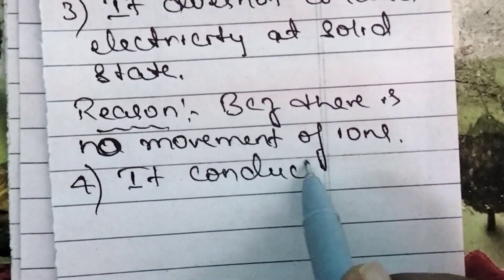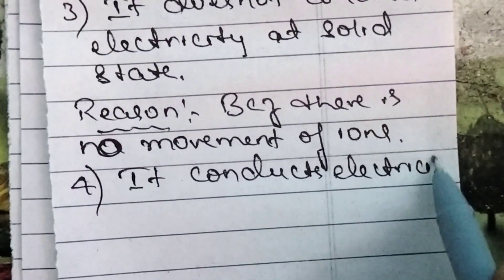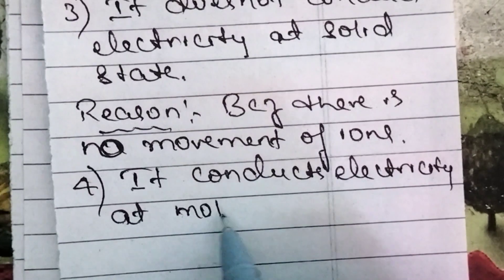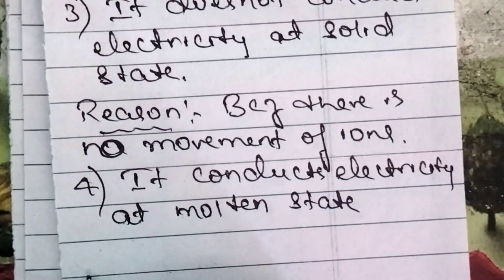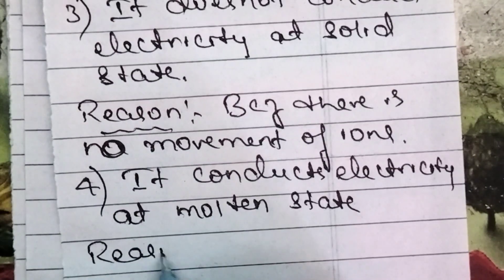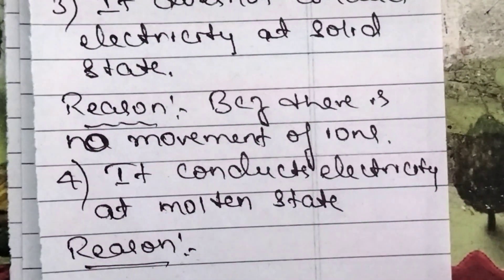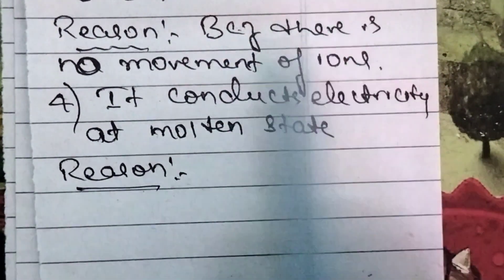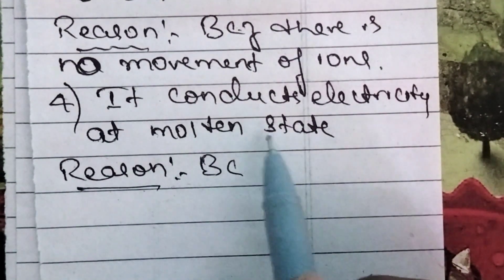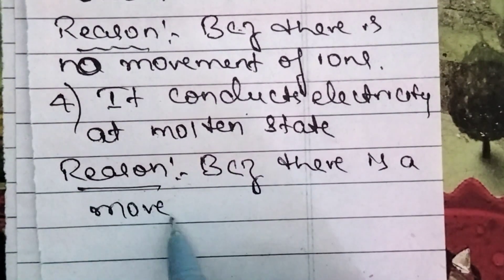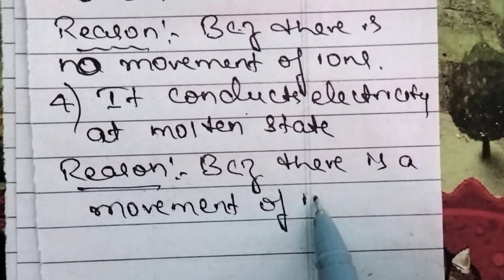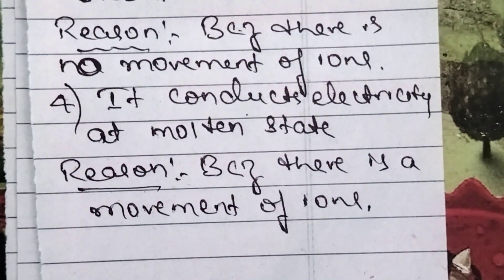Then coming to the last and fourth property: ionic compounds conduct electricity at molten state. The reason is because there is movement of ions at molten state. Since ions can move freely, electricity is conducted.